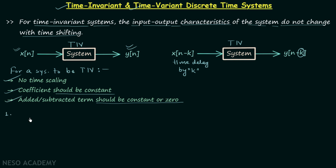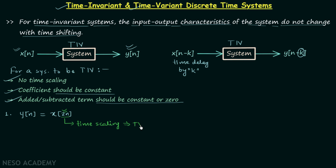In the first example, output y[n] = x[2n]. This example is straightforward because we can see that n is scaled by 2, which means there is time scaling. According to the first condition, there should be no time scaling, and since there is time scaling, the system is time variant.